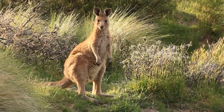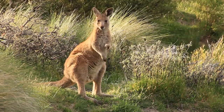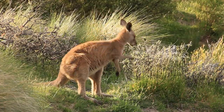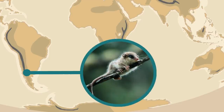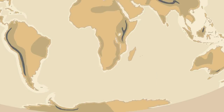Most evidence points to marsupials originating in South America and then migrating to Australia. There are still many species of marsupial in South America today, although they are small and not the most common form of mammal there. Their oldest fossils are known from South America, and there are also fossils from marsupials found on Antarctic islands, meaning they most likely reached Australia by crossing over Antarctica.